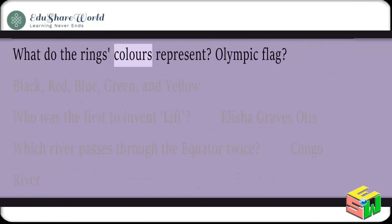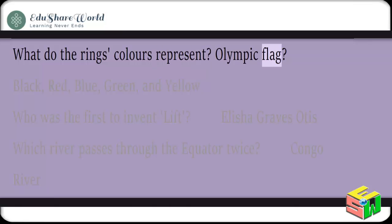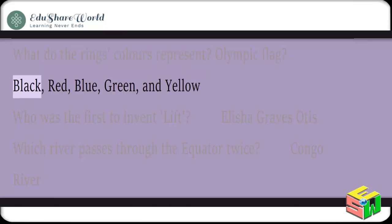What do the ring colors on the Olympic flag represent? The colors are black, red, blue, green, and yellow.